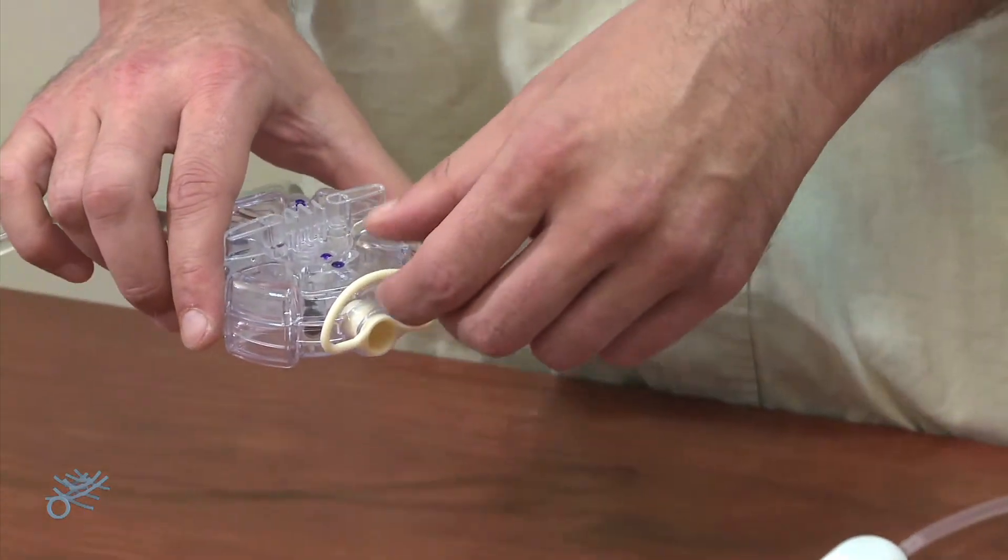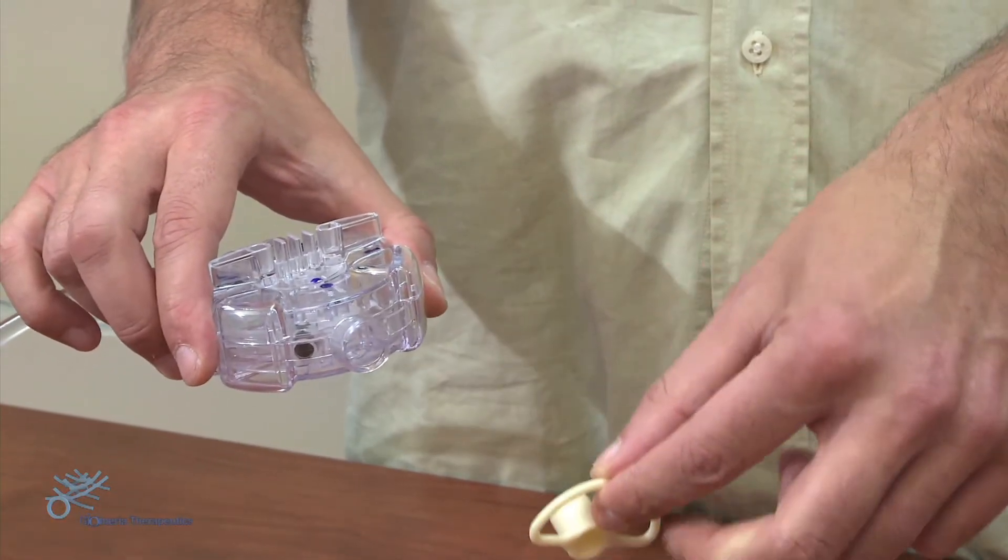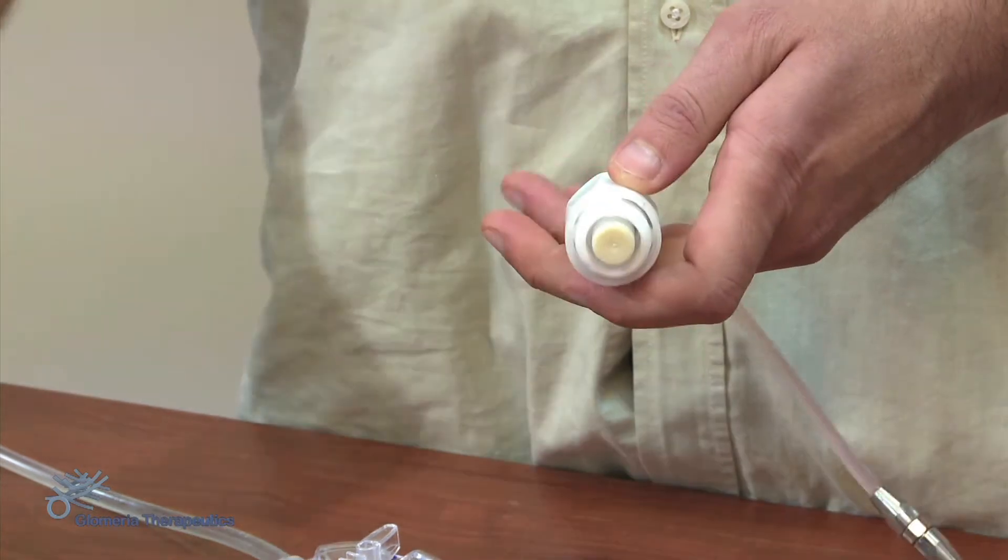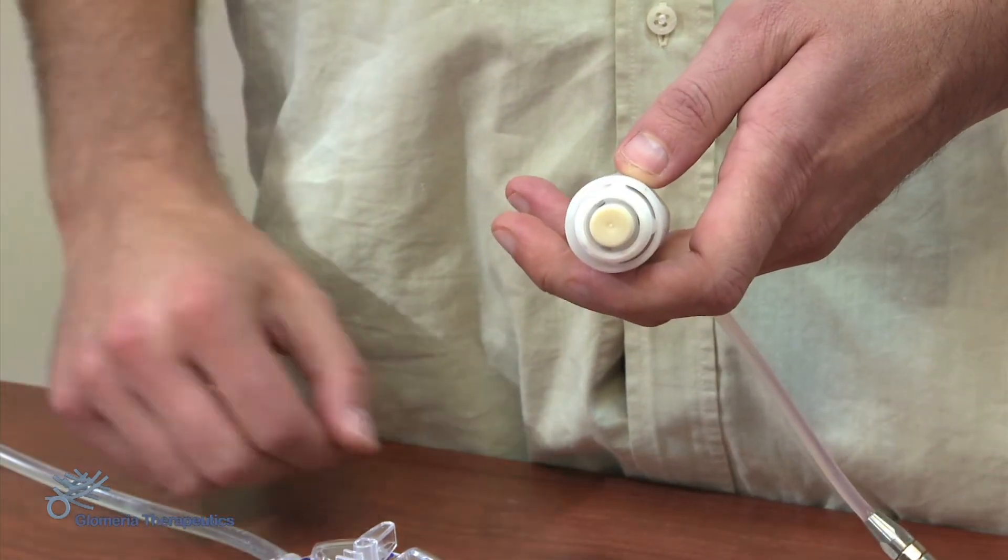We now pull the rubber ring on the protective cap on the Desmo connector. At this point, we unscrew the top of the Desmo patient set and place it on the counter.